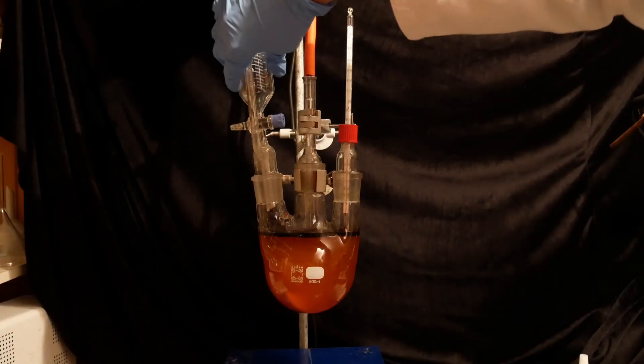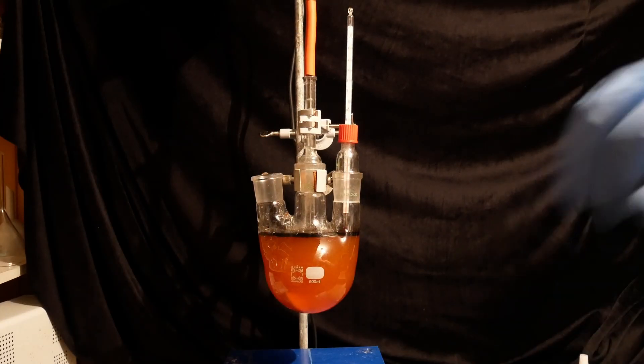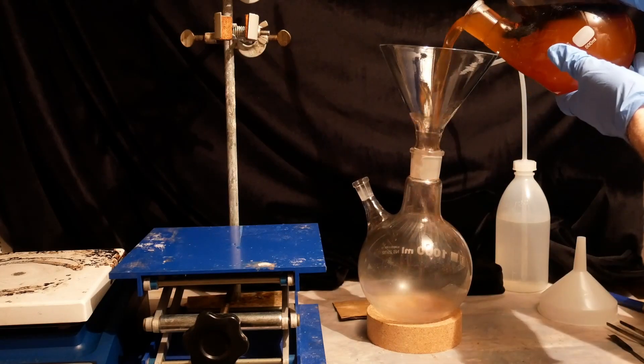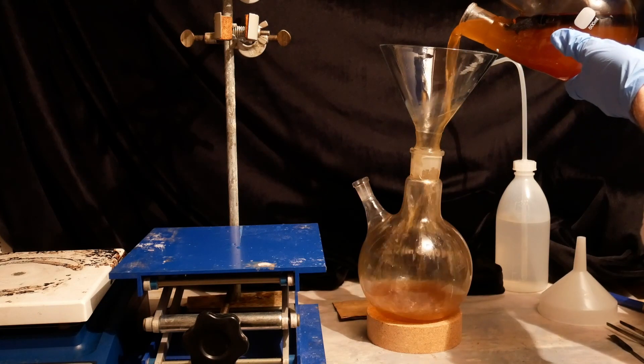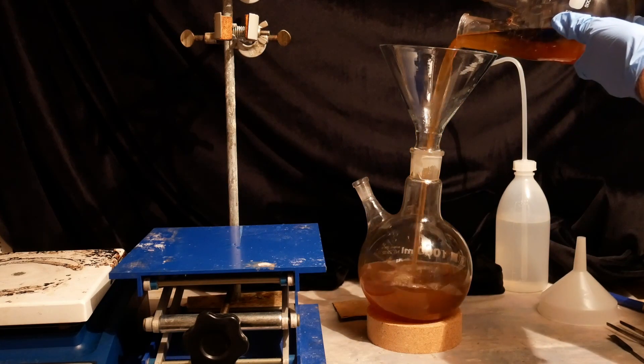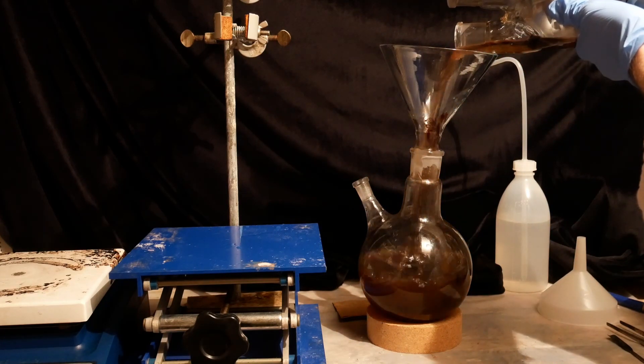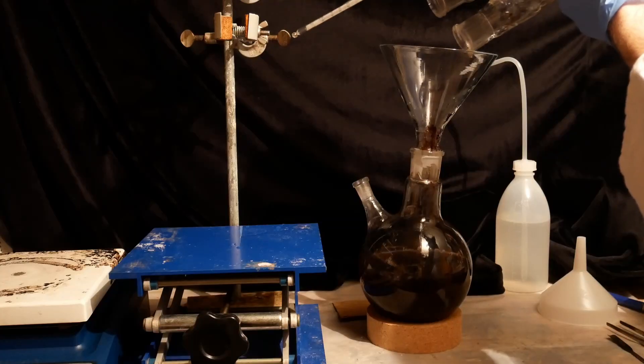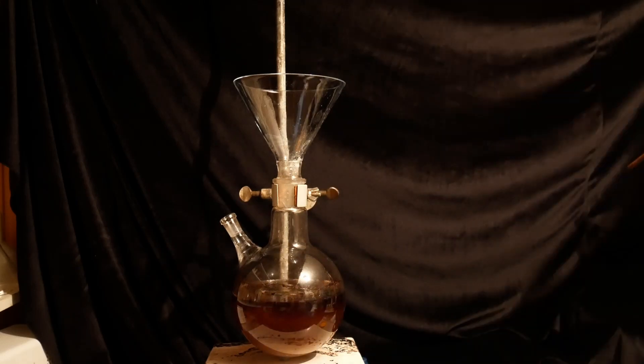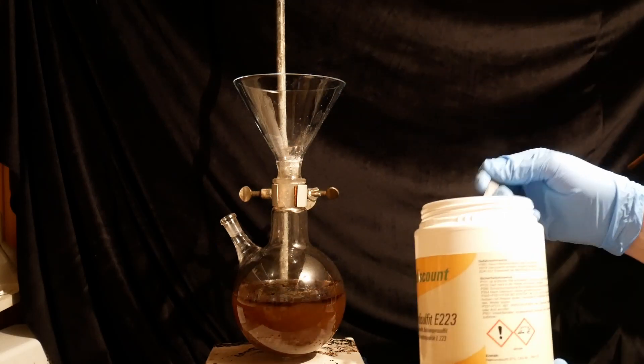The setup is now disassembled and the raw reaction mix is transferred to a bigger flask for the next step. To fully decompose the intermediate carbamate salt, the mixture has to be acidified to a pH of about 2.